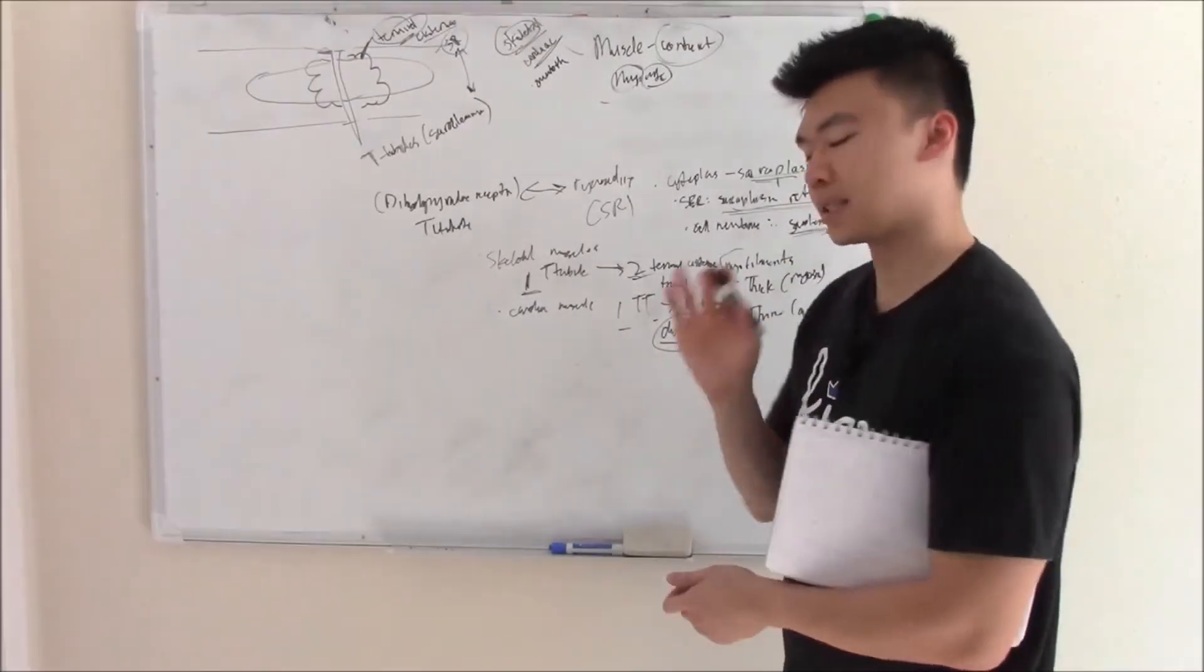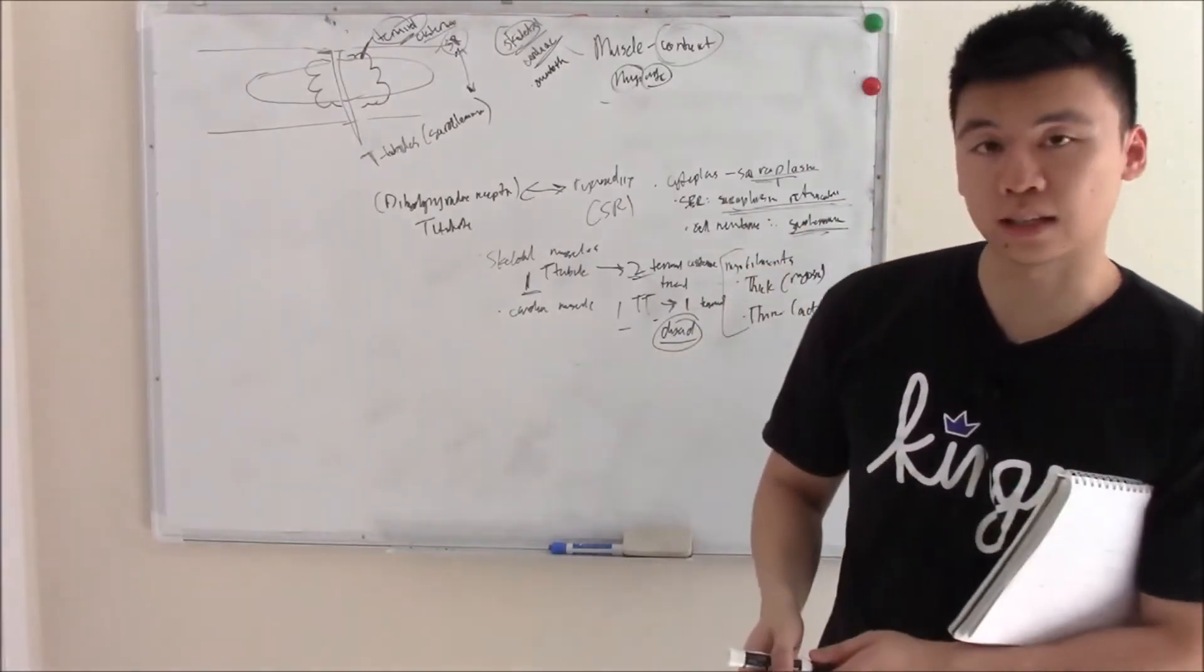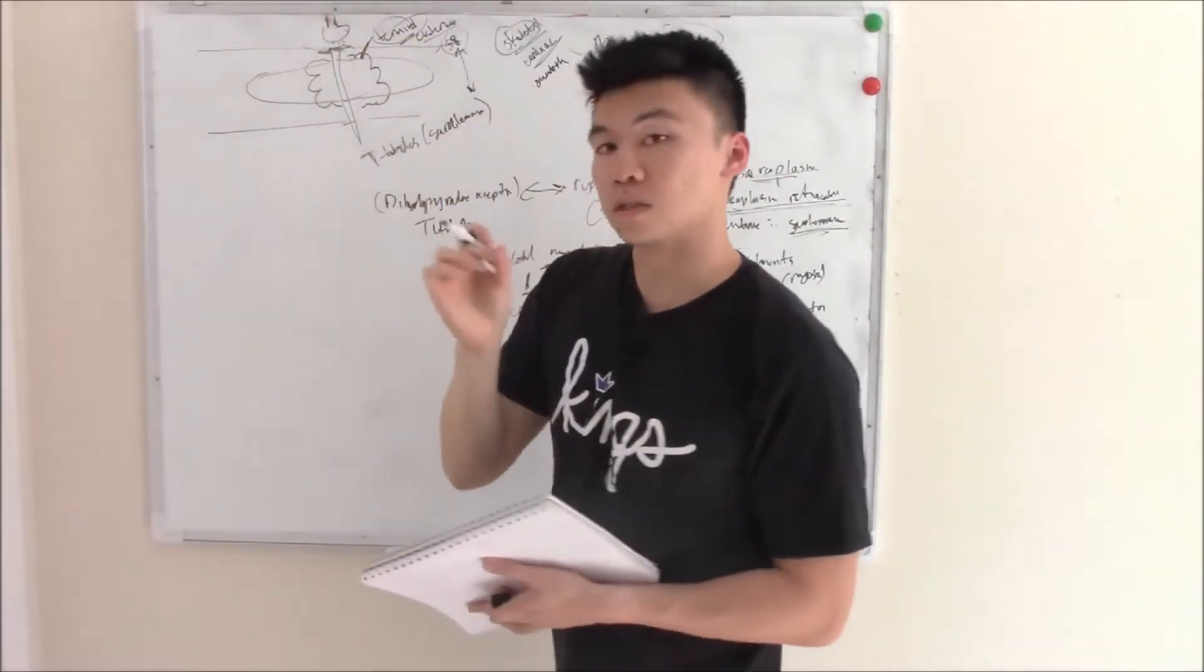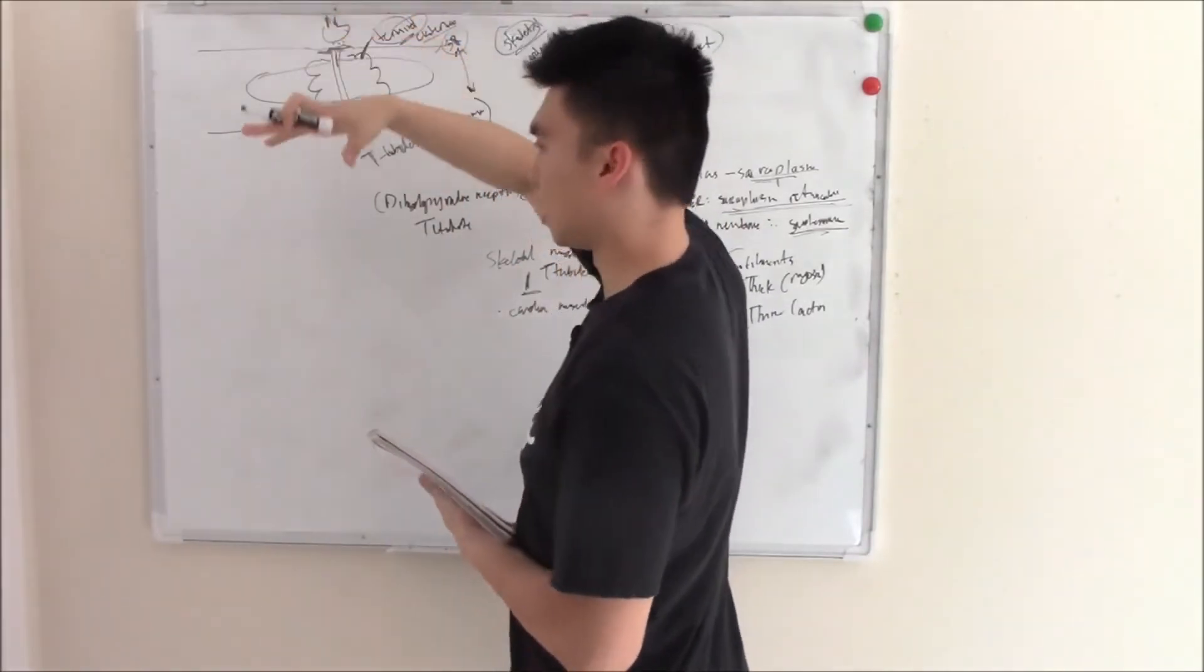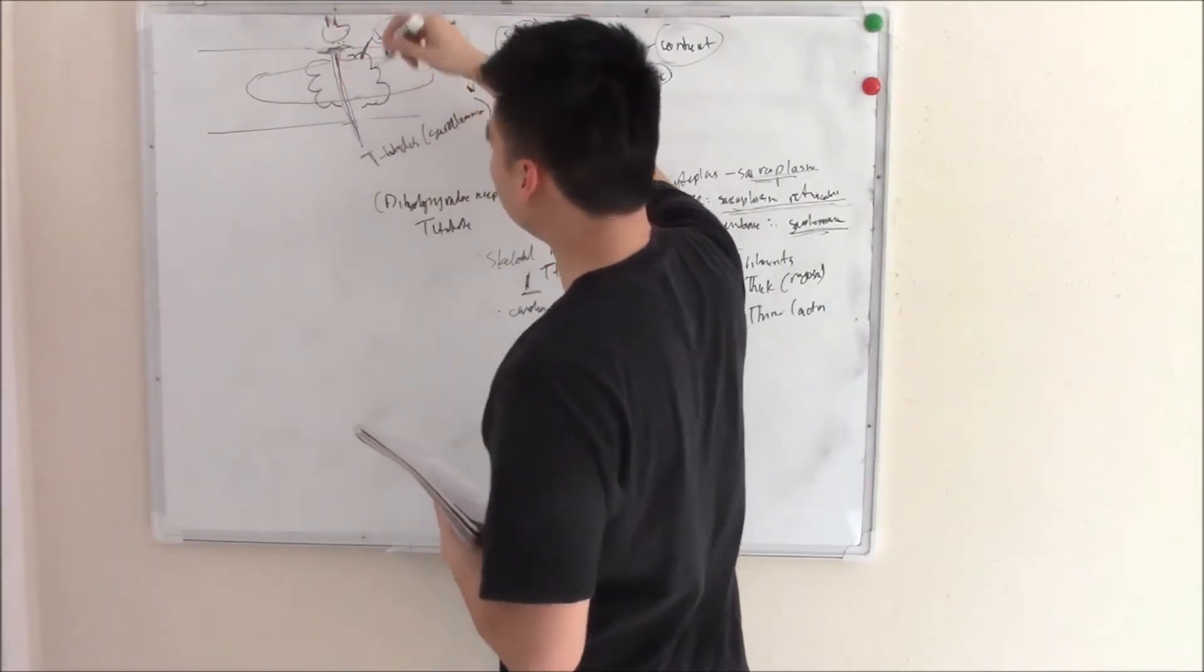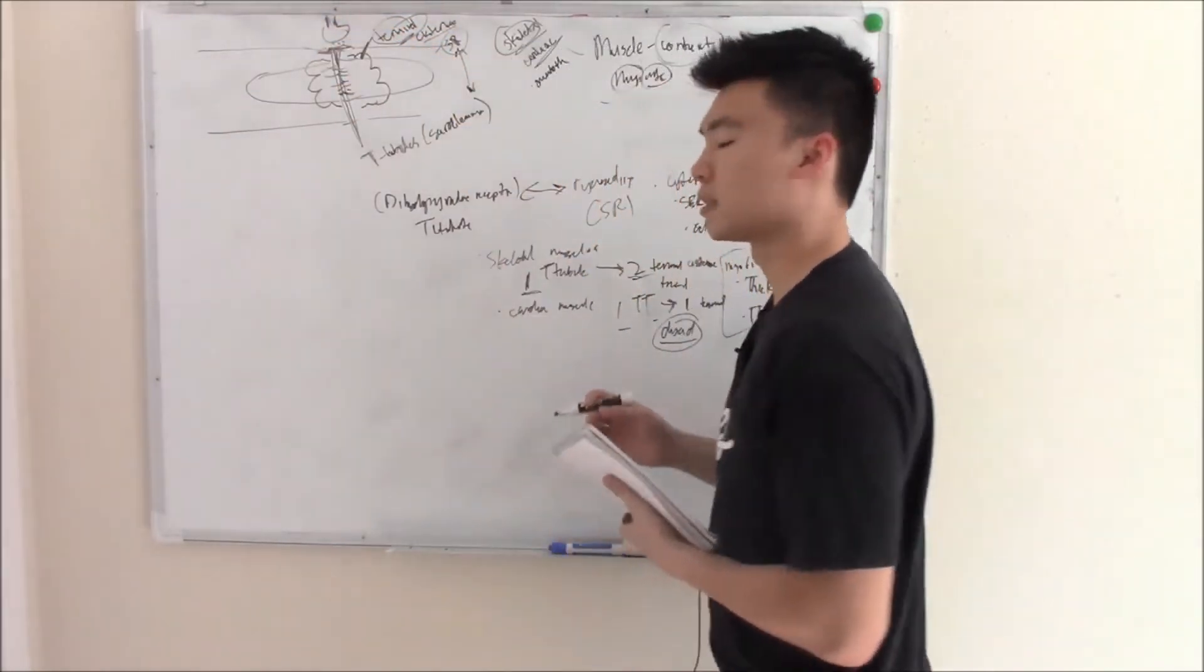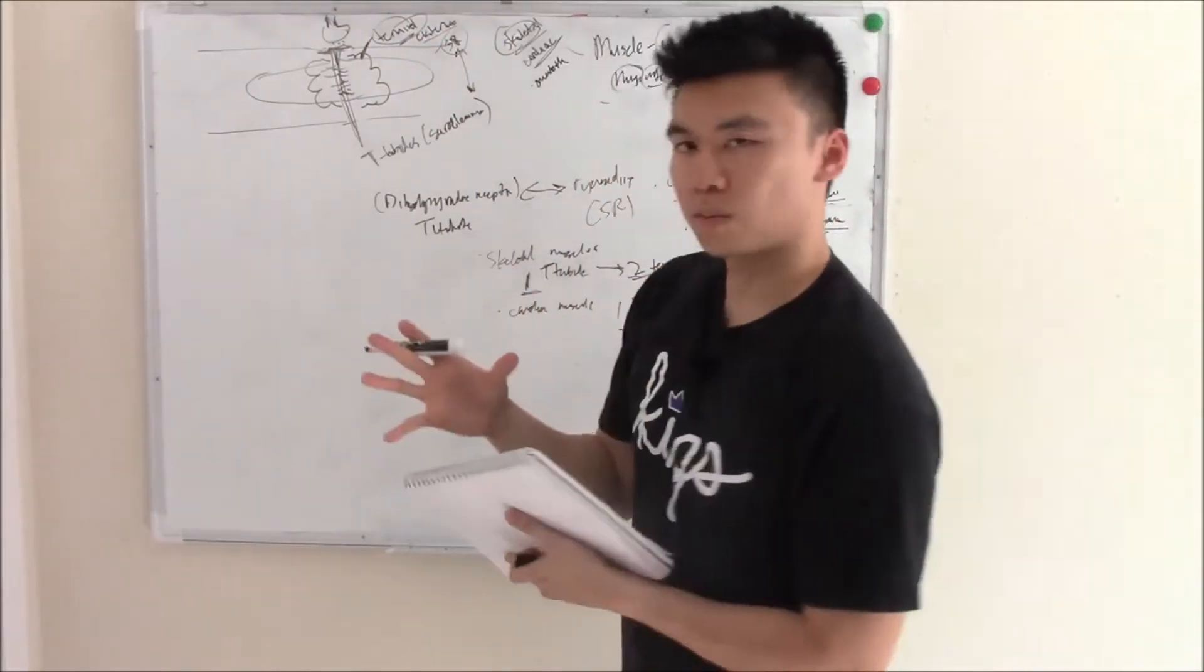This communication is important because the muscle needs it to contract. A neuron releases acetylcholine and causes depolarization of the muscle cell. That depolarization travels down the membrane, including the T-tubule invagination, allowing it to talk to the sarcoplasmic reticulum.